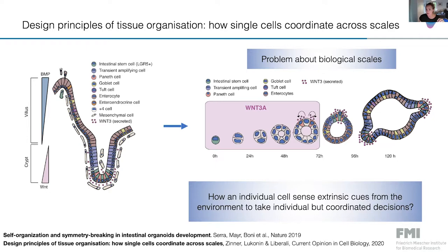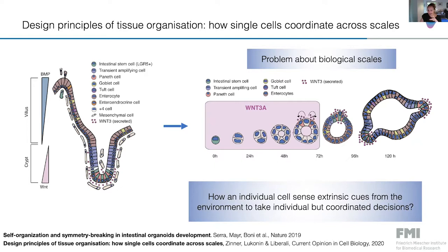This is a problem about biological scale — both spatial and temporal. You might have an event happening at the plasma membrane of one cell, a signaling event that is extremely fast, that has consequences days later at the tissue scale. So we need ways to follow these cells at different biological scales. How does a population of genetically identical cells in the same environment create emerging tissue-level properties and pattern tissue in vitro without extracellular cues?